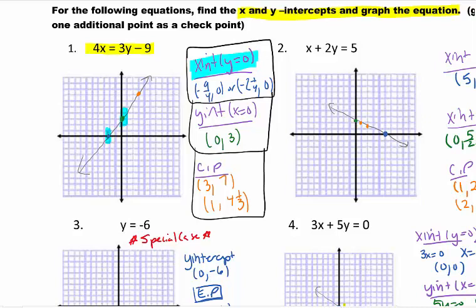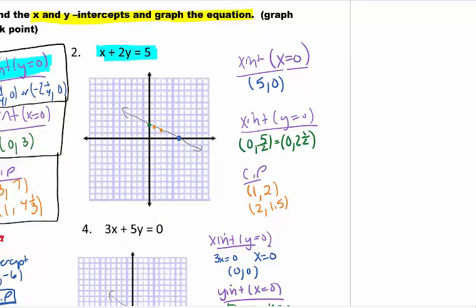So pause it and go ahead and do number 2. x plus 2y equals 5. When we plug in x-intercept, which is plugging in y equals 0, I get x equals 5. So that's my first point, which is in blue. y-intercept plugs in x equals 0. When I plug in x equals 0, I get 2y equals 5. Divide both sides by 2. I get 5 halves, which is the same thing as 0, 2.5.